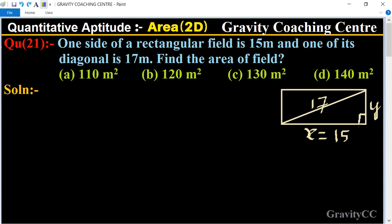Now we use Pythagorean theorem in this triangle. So y² + x² = 17². The value of x is given, so we can solve for y².